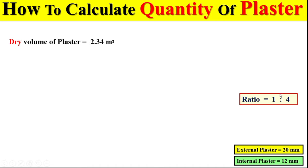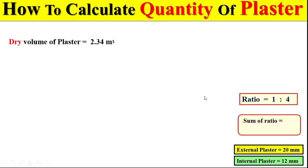In this mix ratio, 1 represents the total quantity of cement and 4 represents the total quantity of sand. To calculate the total quantity of cement, we first find the sum of the ratio by adding the cement and sand parts together, giving us a total of 5 parts. In this total of 5 parts, 1 part represents the total quantity of cement.